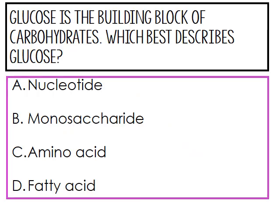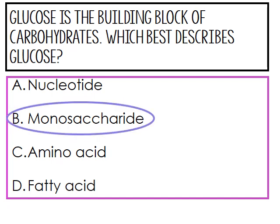Let's see what we can recall. Glucose is the building block of carbohydrates. Which best describes glucose — is it a nucleotide, a monosaccharide, an amino acid, or a fatty acid? If you answered monosaccharide, you are correct. Way to go.